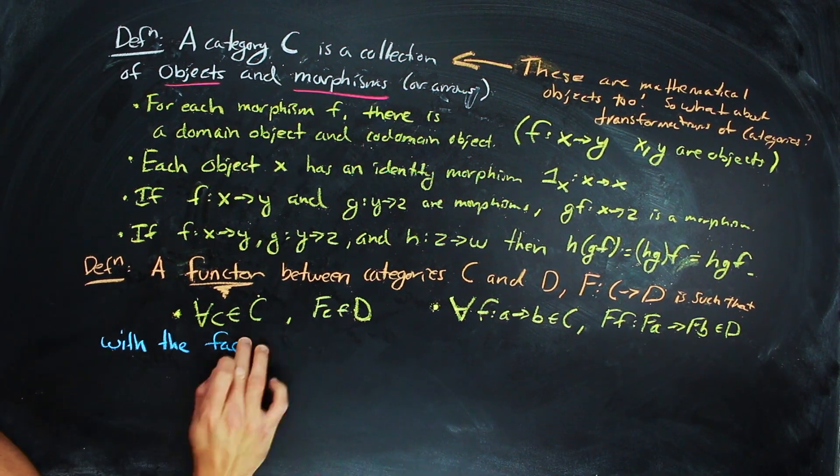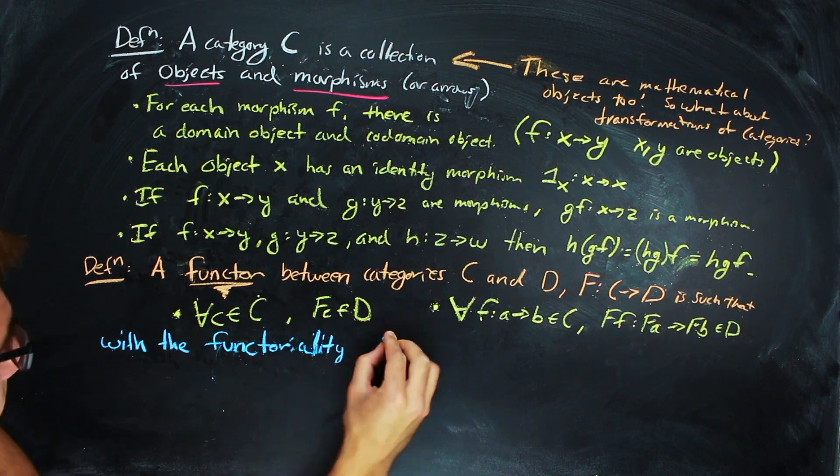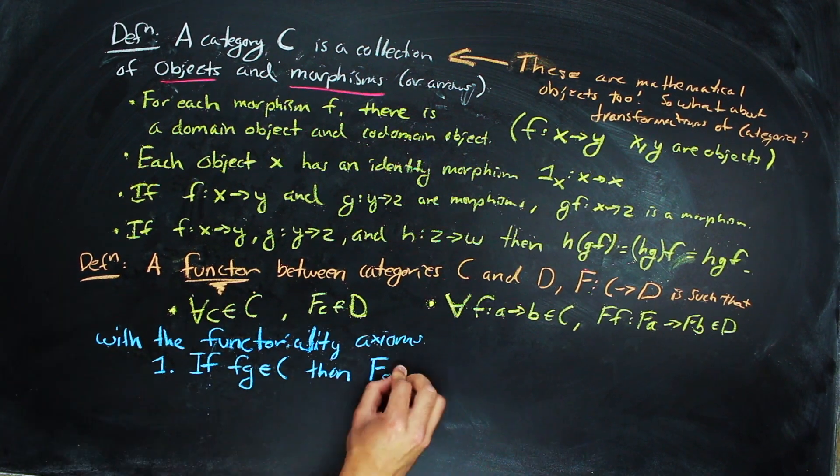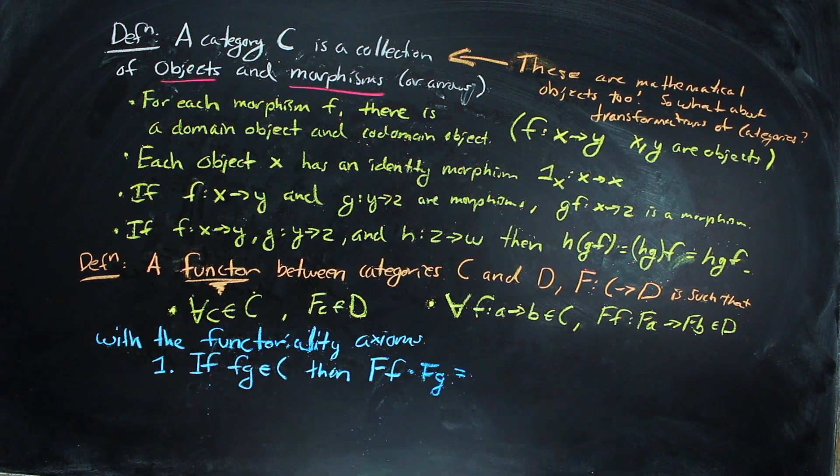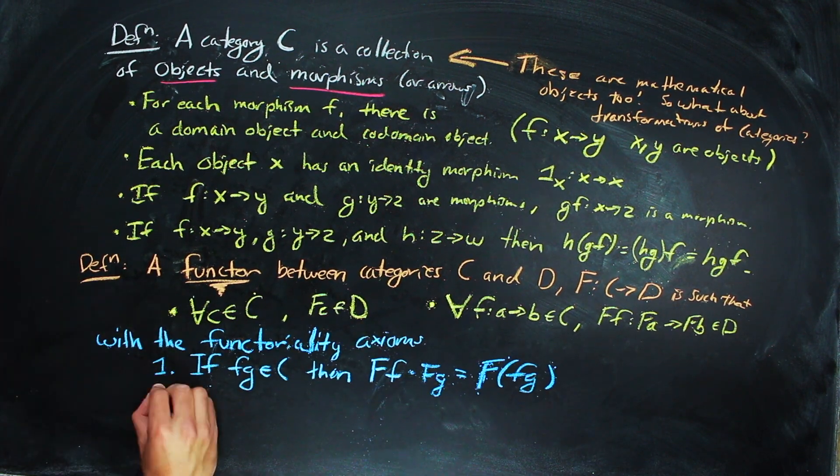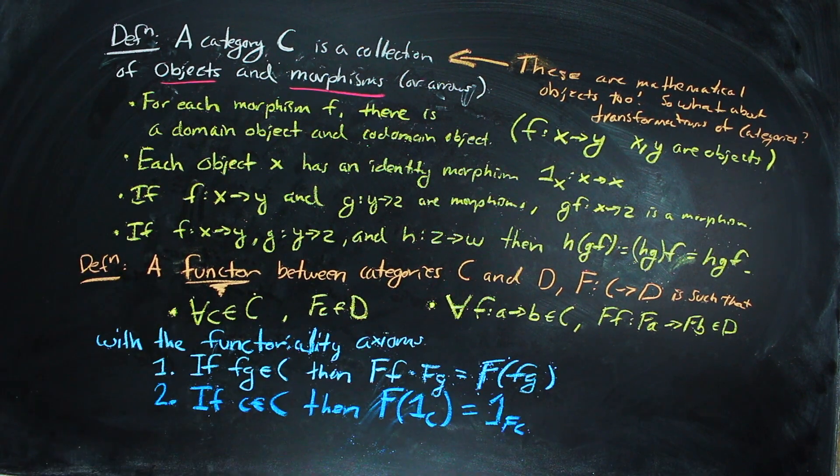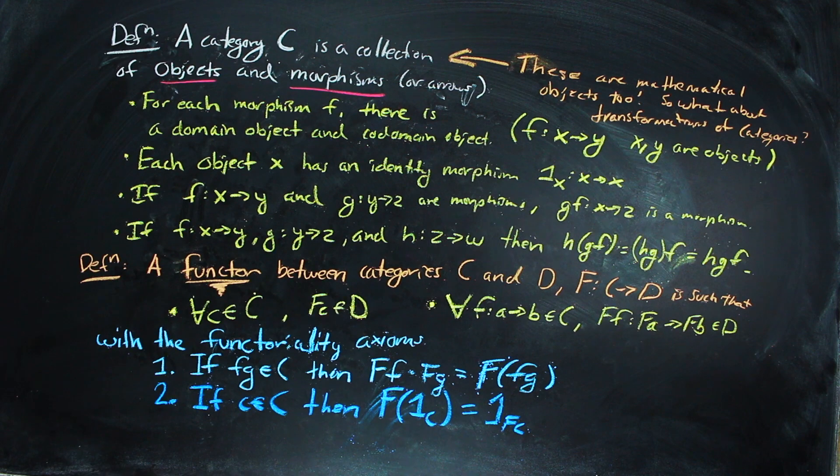Next, there are two functorality axioms. First, for any composable pair fg in big C, big F(f) and big F(g) are composable and respect the composition in big C. Second, for each object in big C, the identity morphism 1_c is respected by the functor.